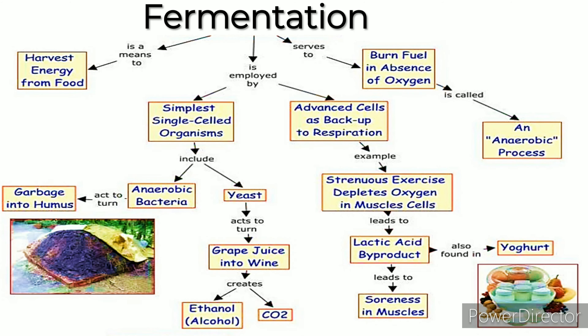Fermentation is a means to harvest energy from food. It is employed by simplest single-celled organisms including anaerobic bacteria which turn garbage into humus, and yeast which turns grape juice into wine, creating ethanol and carbon dioxide. Fermentation is also employed in advanced cell backup respiration; for example, strenuous exercise depletes oxygen in muscle cells leading to lactic acid buildup, also found in yogurt, which causes soreness in muscles. Fermentation serves to burn fuel in the absence of oxygen, which is called an anaerobic process.